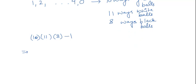This gives 880 minus 1, that will be equal to 879. So these are the number of ways in which we can select one or more balls from the given different type of balls.